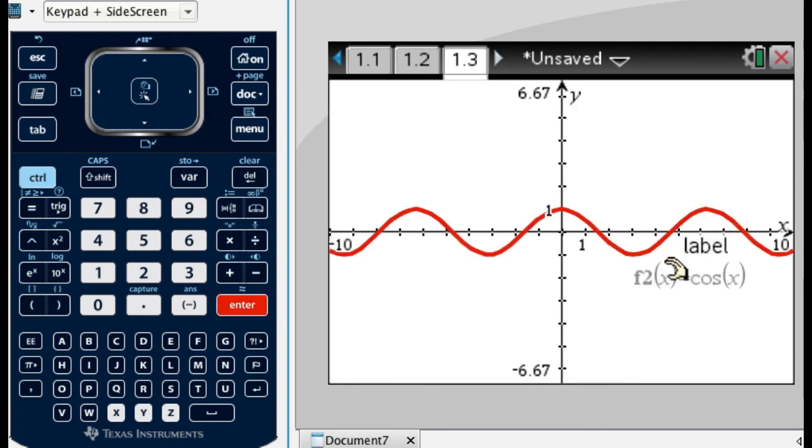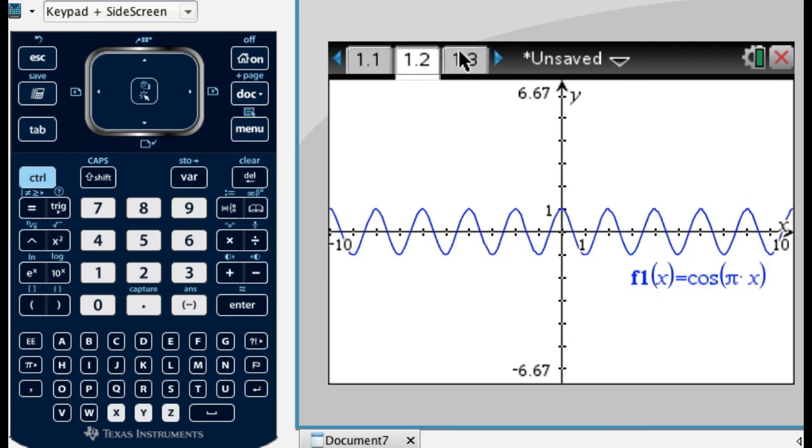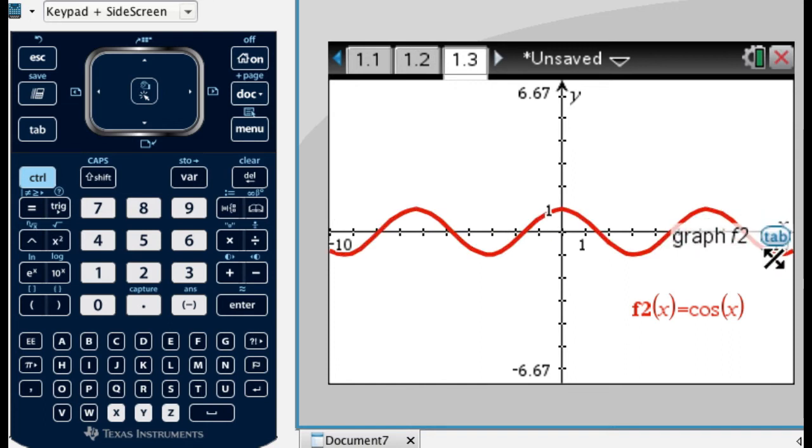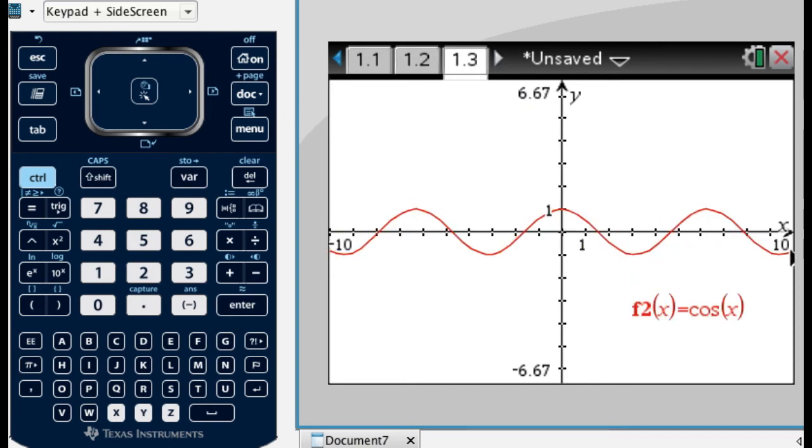And so I'm seeing this. And this actually, it looks a lot like the previous graph. Except it's way more spread out. So you can see they have the exact same window. x goes from negative 10 to 10, and y goes from negative 6.67 to 6.67. So same window, but this one's way more spread out.